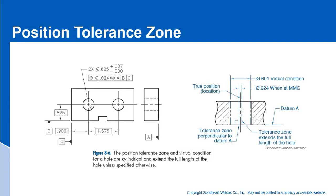So that's how we would tool it if we were drilling those holes — that's a perfect choice. Datum B is the longest, biggest other plane on this part, and datum C is the third largest plane. So we like the datum reference that's set up in the feature control frame.